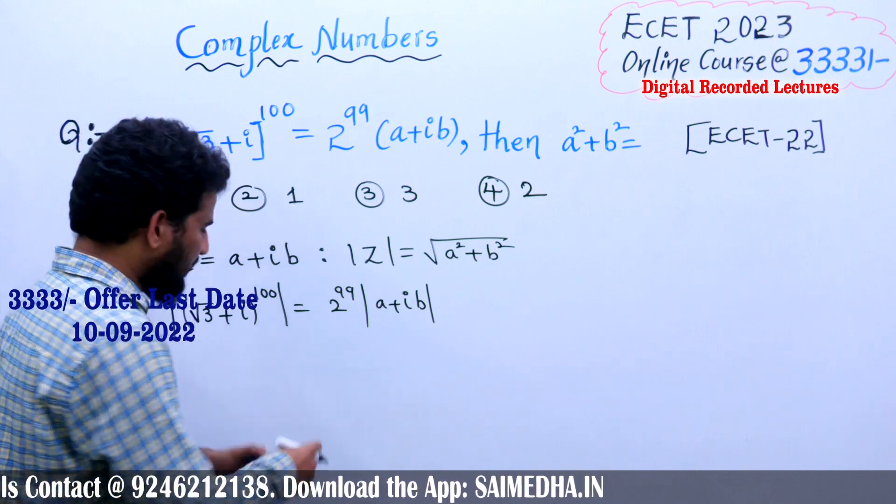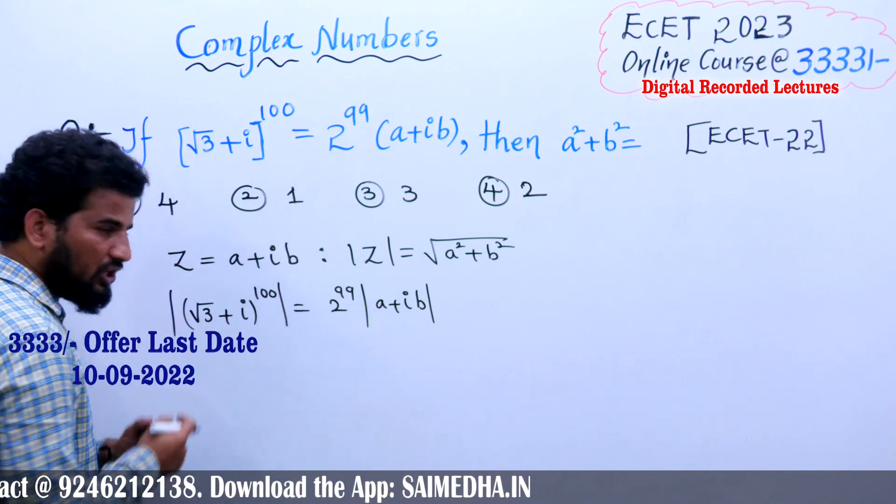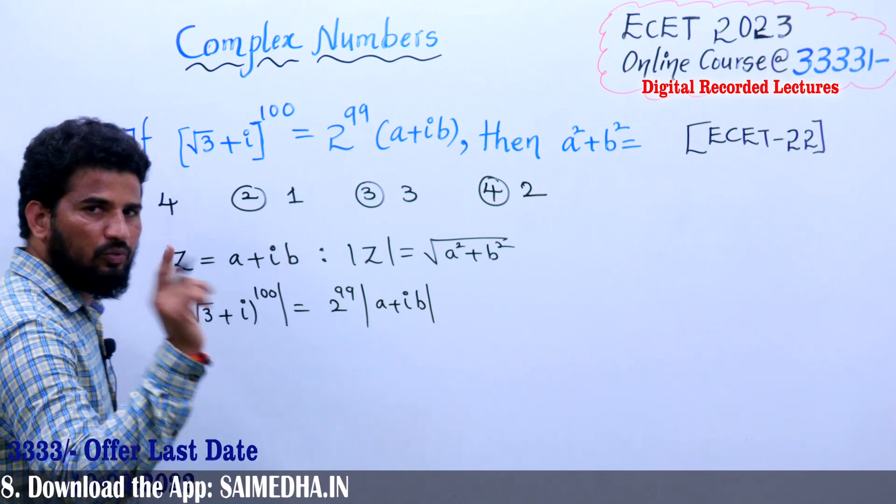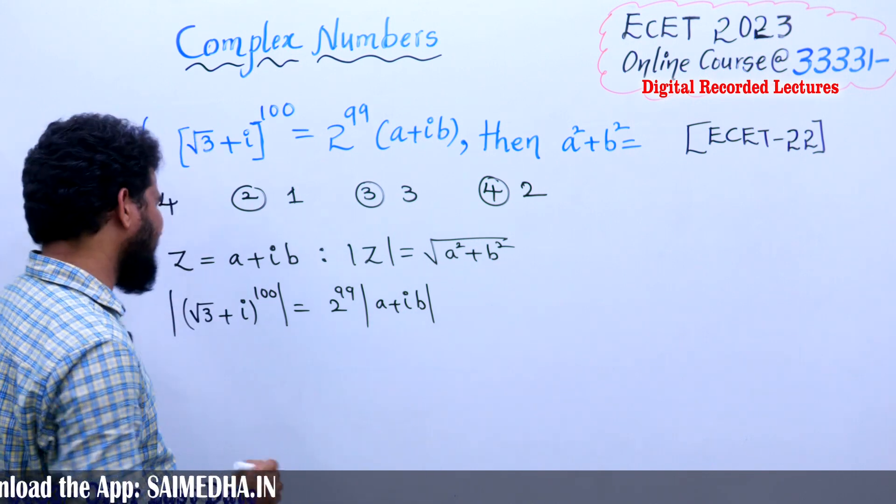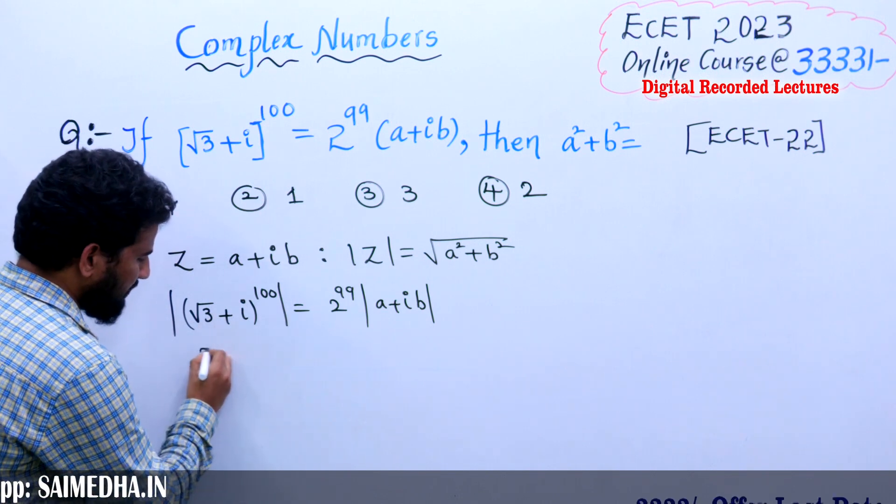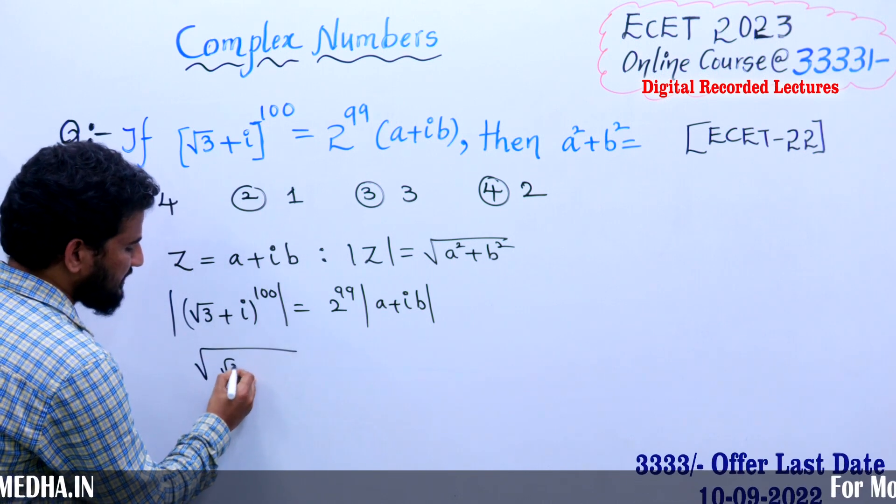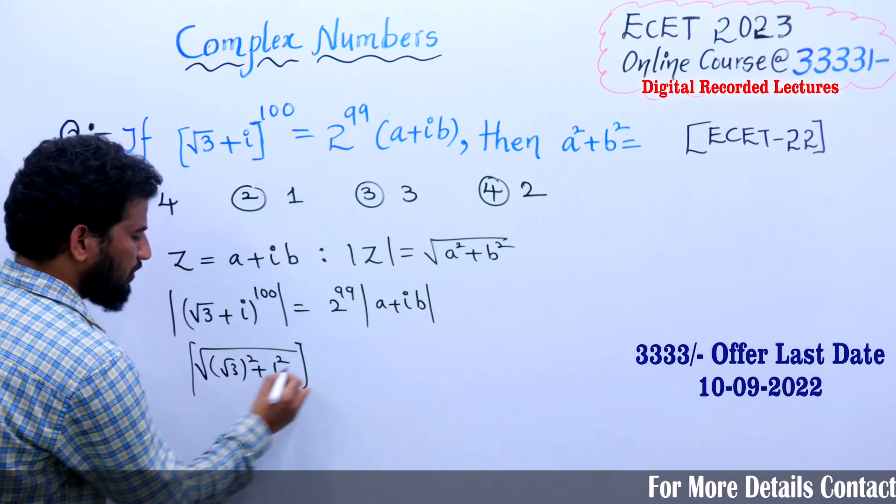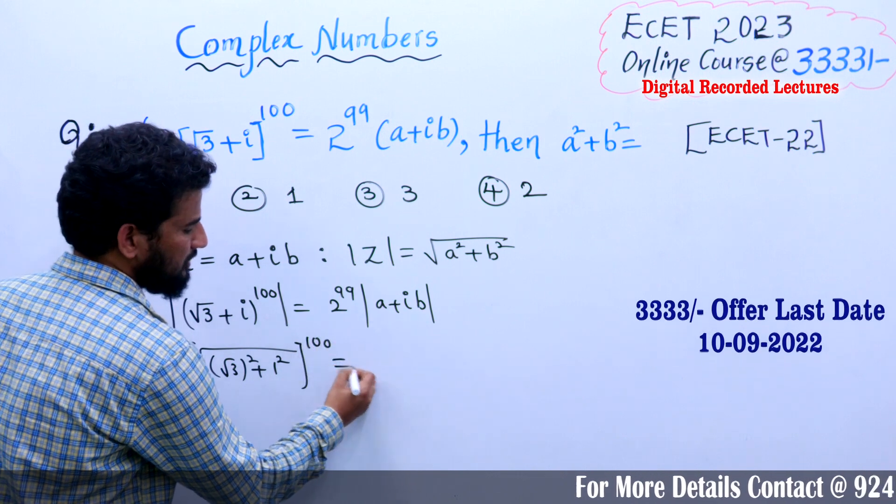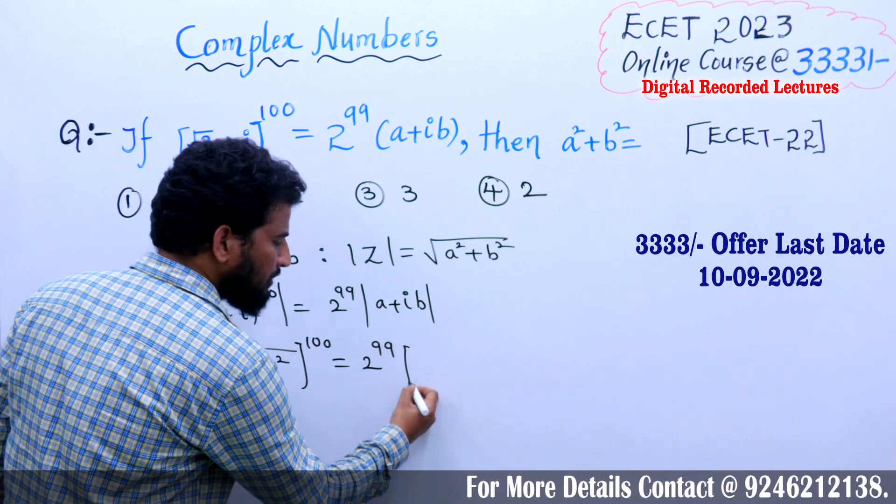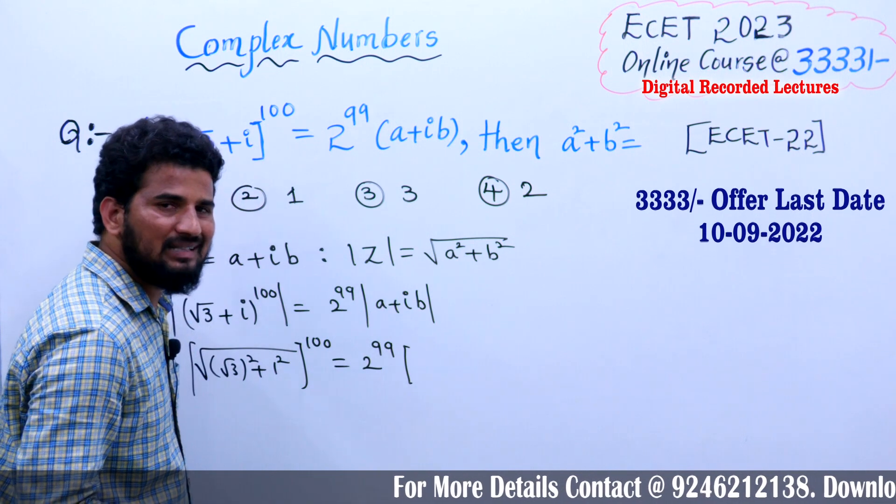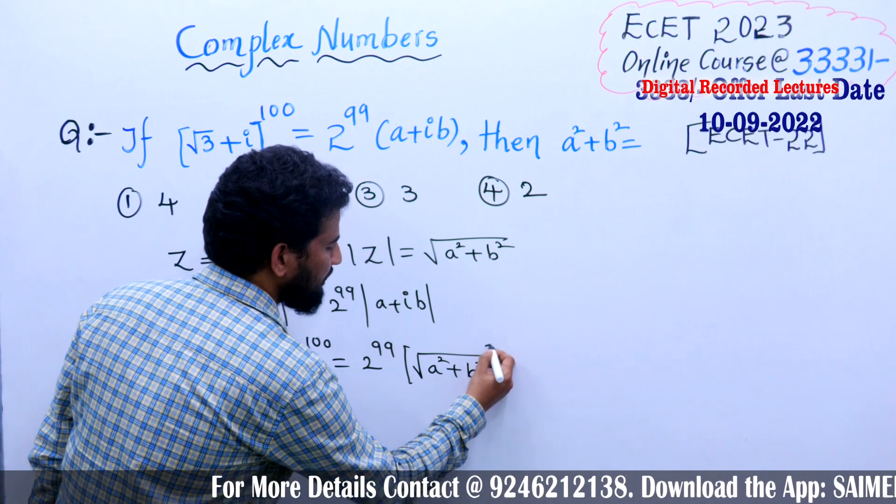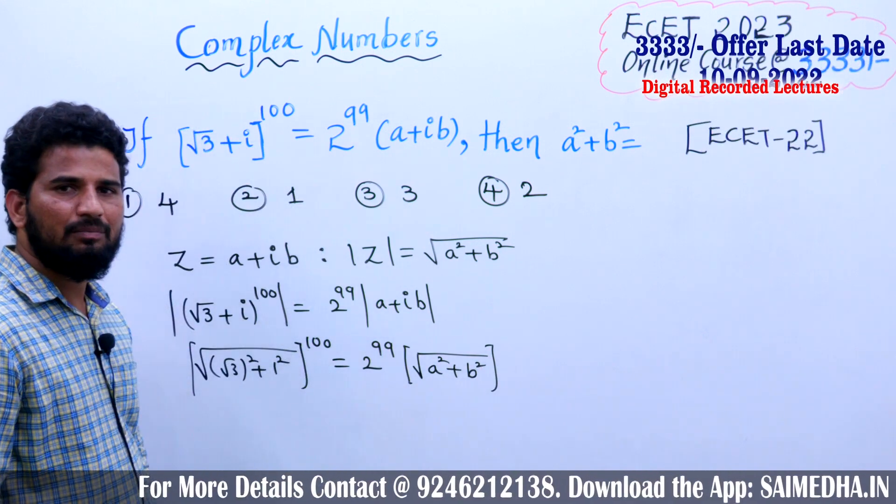What about the modulus of this value? If we have power 100, modulus applies internally. What is the real part here? √3 is the real part. What about the imaginary part? 1 is the imaginary part. The modulus value is going to be √((√3)² + 1²)^100 = 2^99 × √(a² + b²).